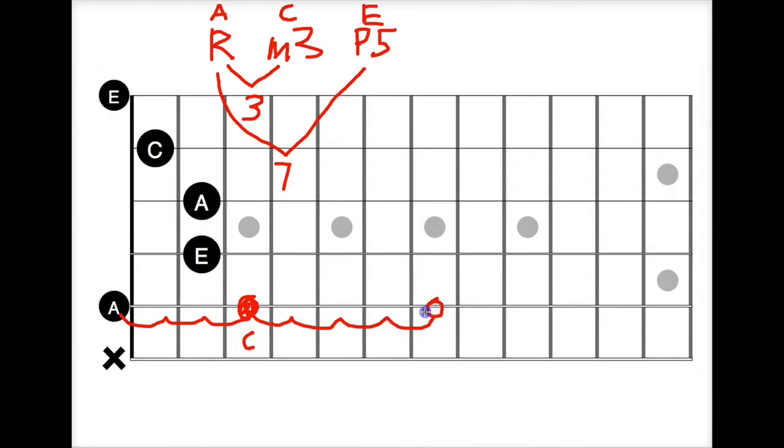So that right there is your E, and that is your A minor chord. And I'll just reiterate this formula: root, minor third, perfect fifth. This will always give you a minor chord.